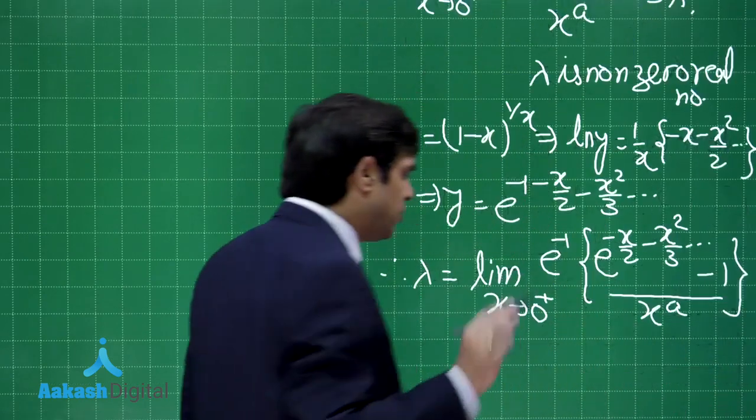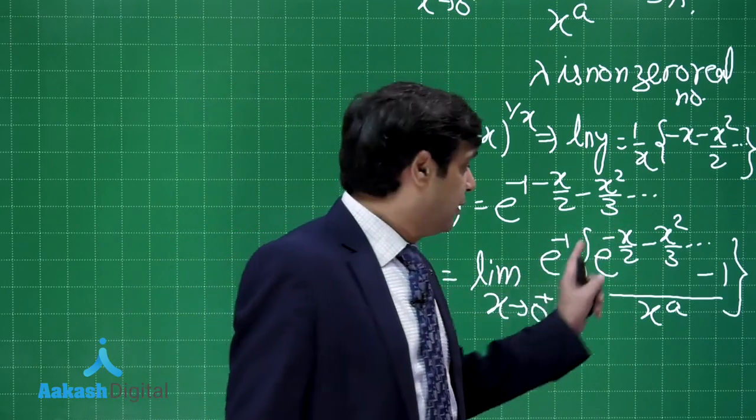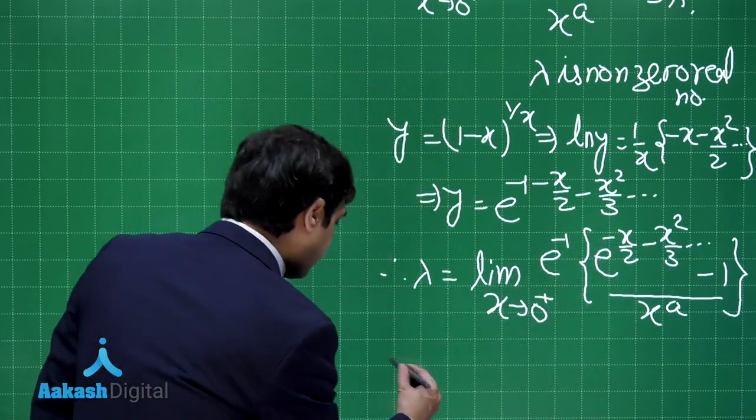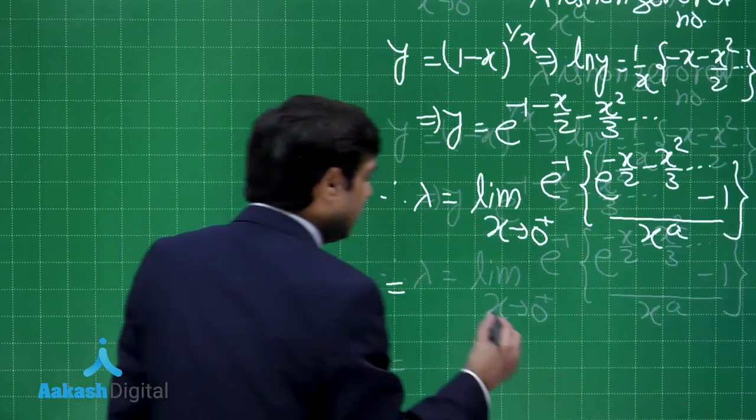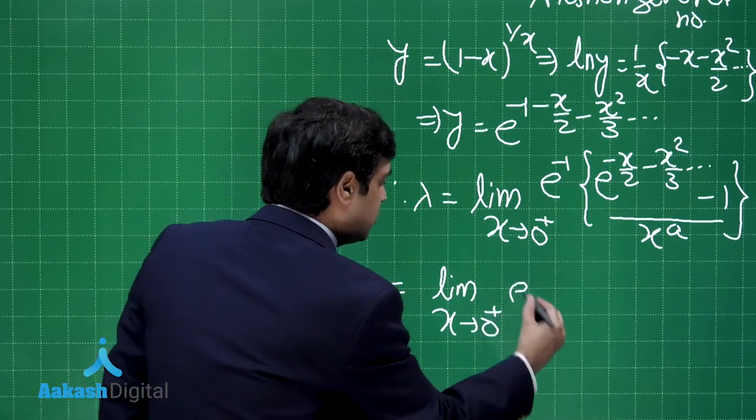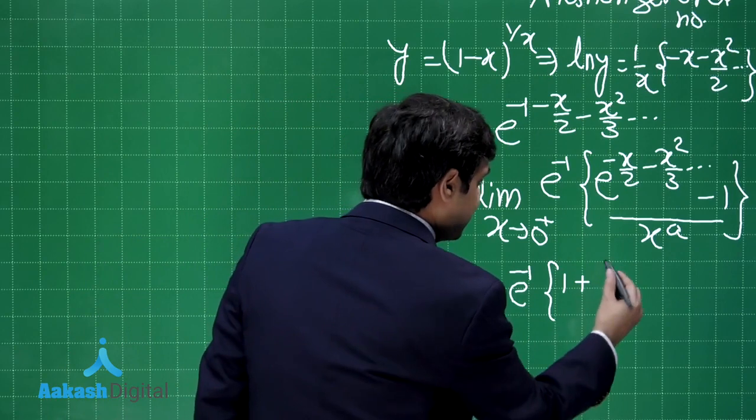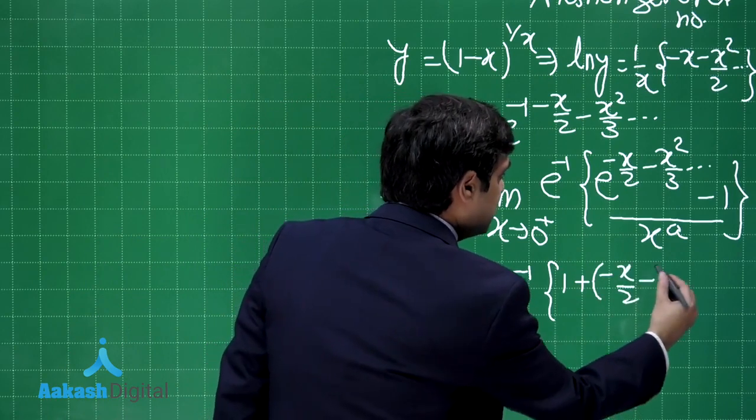Now obviously for non-zero real number this is 0 by 0 form. Right? When you expand this numerator, what you will be getting? Limit x approaching to 0 plus, e to the power minus 1 into 1 plus minus x by 2 minus x square by 3 and so on.